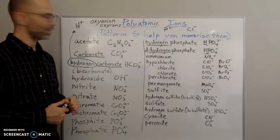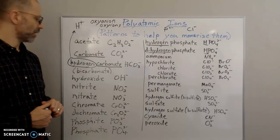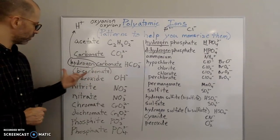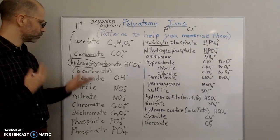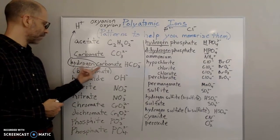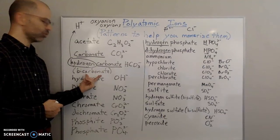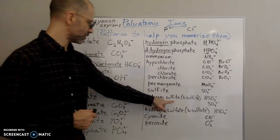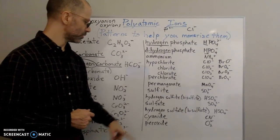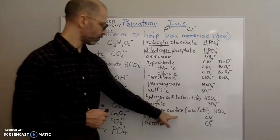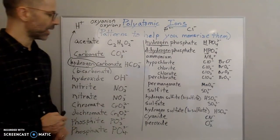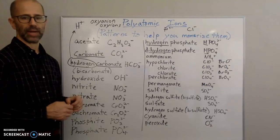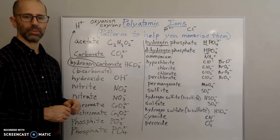One thing I want to point out about naming: some of these ions have dual names — two different names. For example, hydrogen carbonate is also called bicarbonate. Hydrogen sulfite is also called bisulfite, and hydrogen sulfate is also referred to as bisulfate. Keep that in mind — different polyatomic ions can have different names, but most have one primary name.